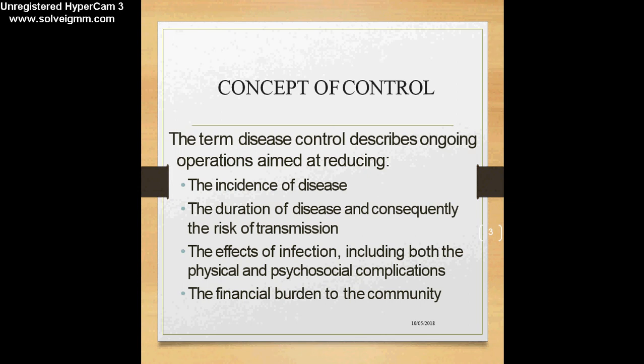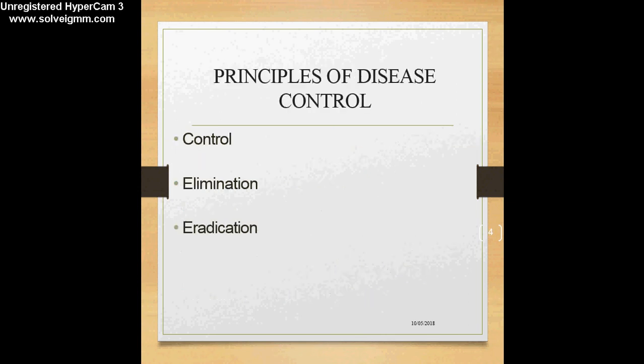Now let's move on to understanding what are the principles of disease control. We need to understand three terminologies. The first one is control, which we have already looked at. Control basically emphasizes reduction of disease incidence — we do not want new cases of the disease to occur.